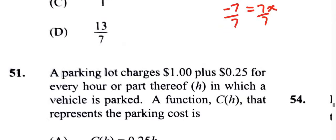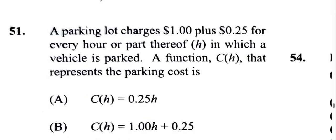Question 51 is telling us that a parking lot charges a dollar in addition to 25 cents for every hour or part thereof in which a vehicle is parked. The function C(h) that represents the parking cost is what? Notice that the dollar here is a fixed charge, so you're going to get charged that dollar no matter what, so we're going to look at the options that represent that.